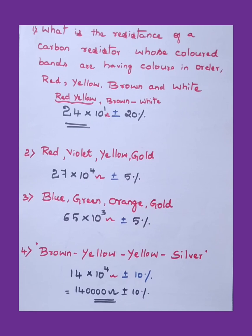Next: red, violet, yellow, gold. What is the value of red? We know, 2. For violet, 7. Yellow is 10 to the power of 4. So 27 × 10^4 ohms ± 5 percentage. For gold it is 5 percentage tolerance.